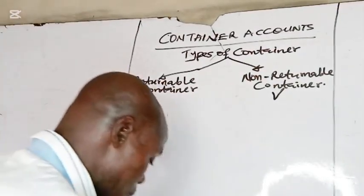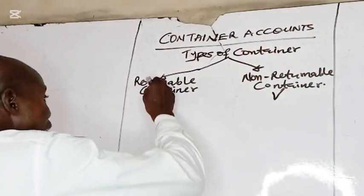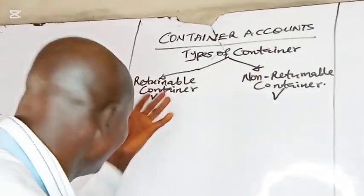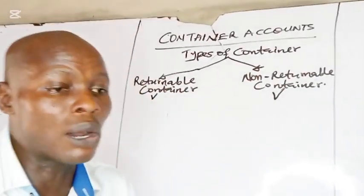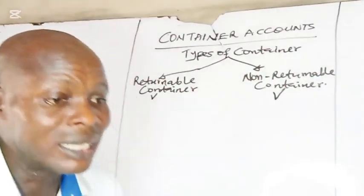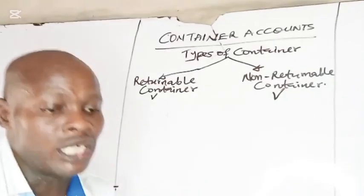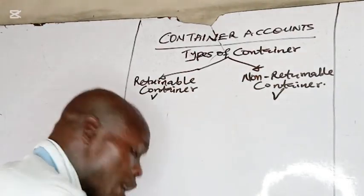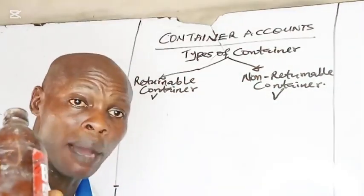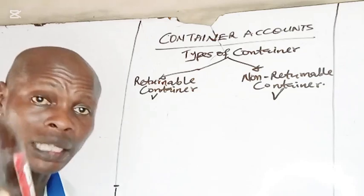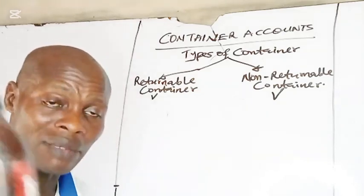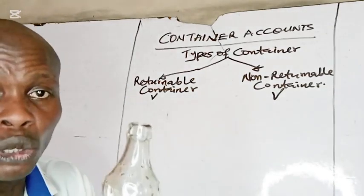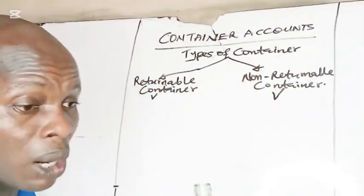But for returnable containers, these are containers that are expected to be returned within a specified period after consuming the content. This bottle of Malt is an example of a returnable container — you are expected to return the bottle after consuming the content.